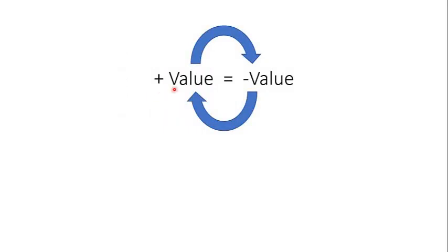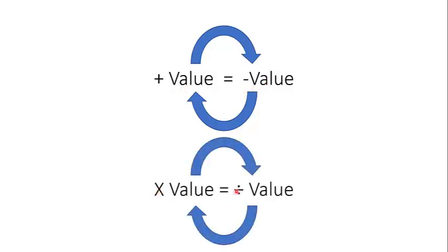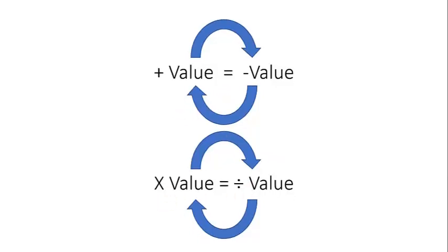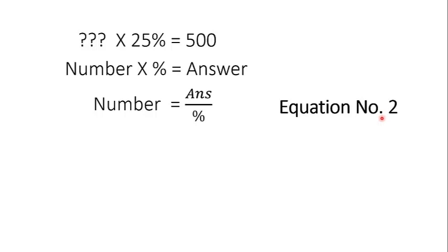And when we move anything from one side to another side of the equation, we also change the sign of that number. If the sign is plus, it will be minus. If the sign is multiplied, it will be divided and vice versa. Here the percentage is multiplying. On the other side it will divide. We name this equation as equation number 2.